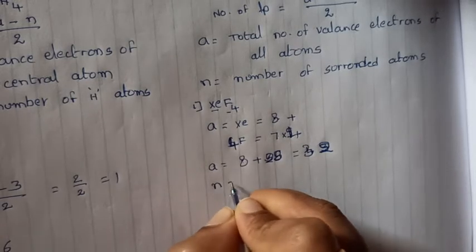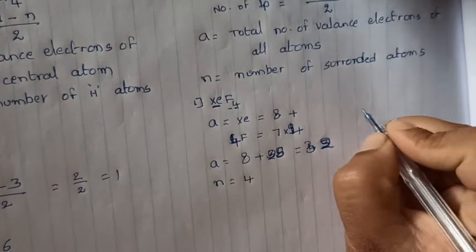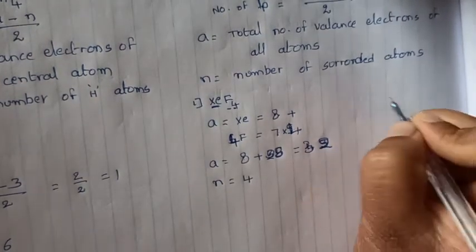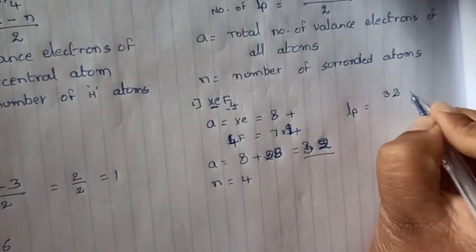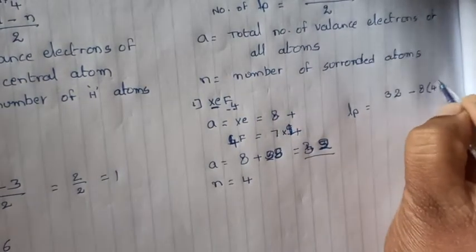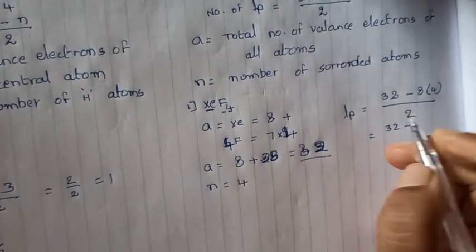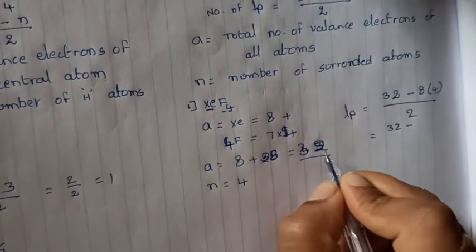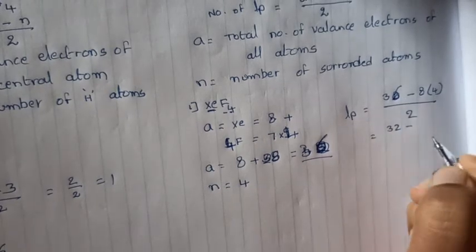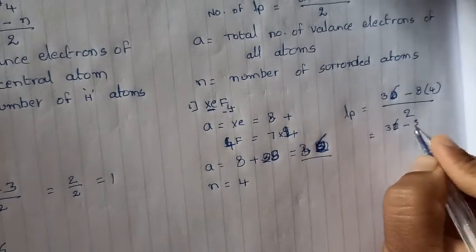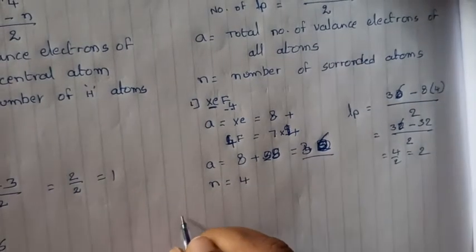N is the number of surrounding atoms other than the central atom — we have four fluorines, so N equals 4. Substituting into the equation: lone pairs equals (32 minus 8 times 4) divided by 2. That equals (32 minus 32) — wait, A is 36, so (36 minus 32) divided by 2 equals 4 divided by 2 equals 2. So XeF₄ has two lone pairs on xenon.